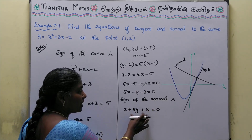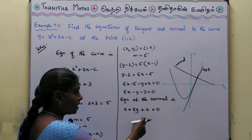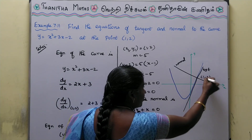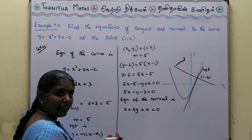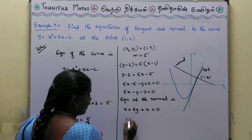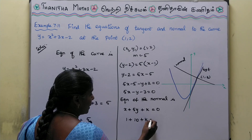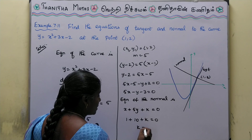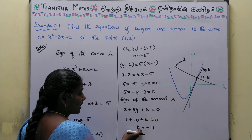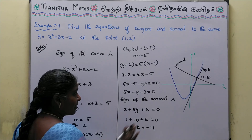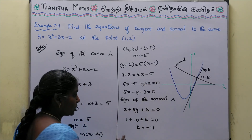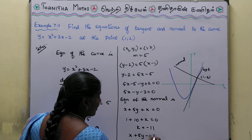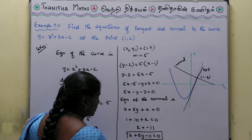The general form of the line is x + 5y + k = 0. This gives the general form of the line equation. This is our required solution.